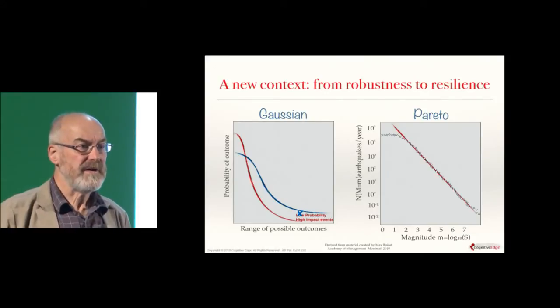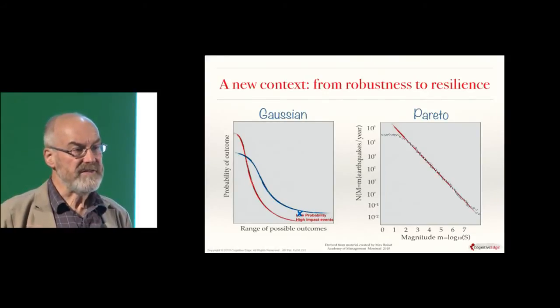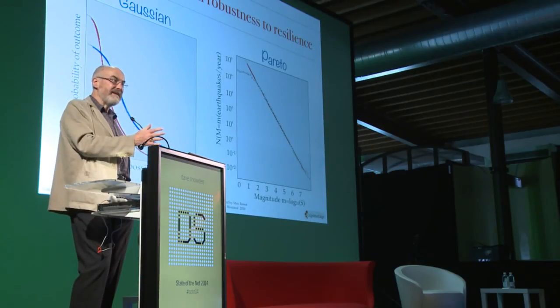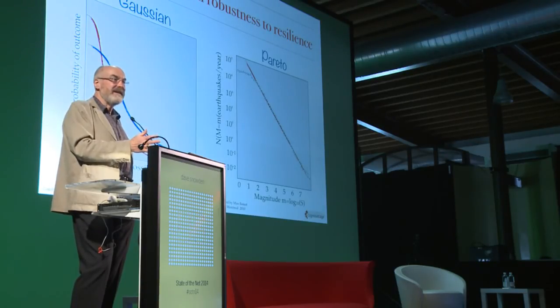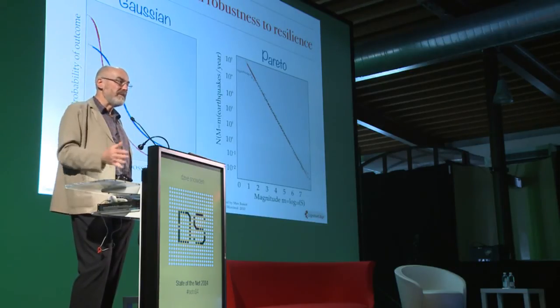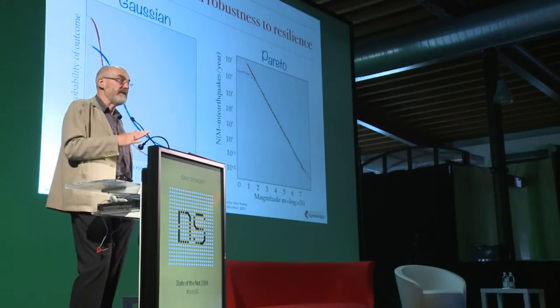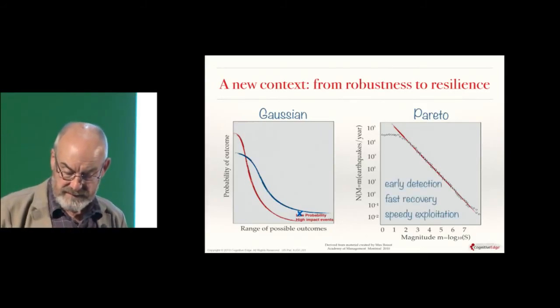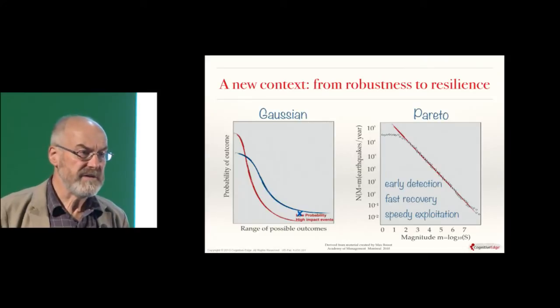You can't manage for all possible failure under a Pareto distribution — you have to manage on the assumption of continuous failure. The key thing is to fail fast, fail early. That's the point about safe-to-fail experiments. An organization which survives by constant small failure is called a resilient organization. An organization which tries to prevent all failure is a robust organization — and when the accumulation of small failures builds up, it finally breaks catastrophically. Resilience is surviving change, and that requires early detection, fast recovery, and therefore speedy exploitation.